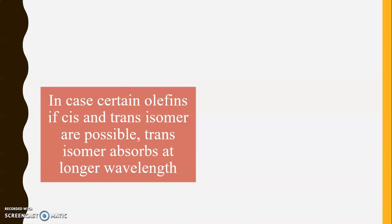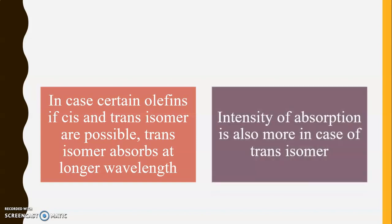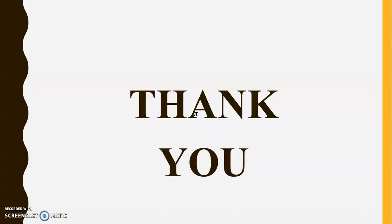In certain olefins where cis and trans isomers are possible, the trans isomer absorbs at the longer wavelength, and the intensity of absorption is also greater for the trans isomer. Trans isomers are more stable than cis isomers, so they require lesser energy, and that's why they absorb at longer wavelength. This concludes the discussion of the different transitions occurring in UV visible spectroscopy. Thank you.